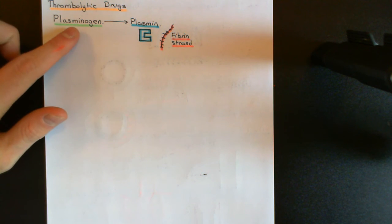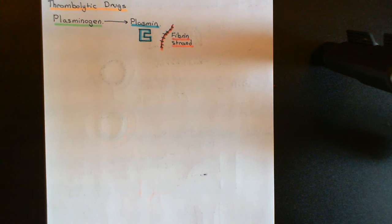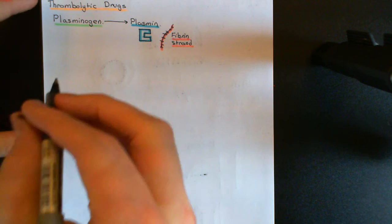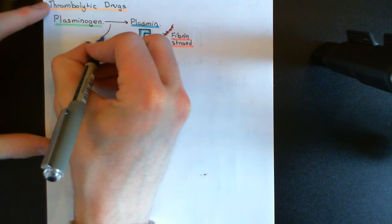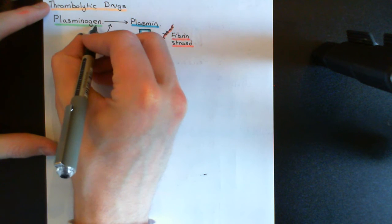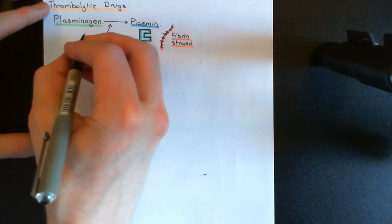Now, how does plasminogen get activated to plasmin? There are two major mechanisms by which plasminogen can be activated to plasmin, and these involve two different enzymes which have the job of converting plasminogen to plasmin.